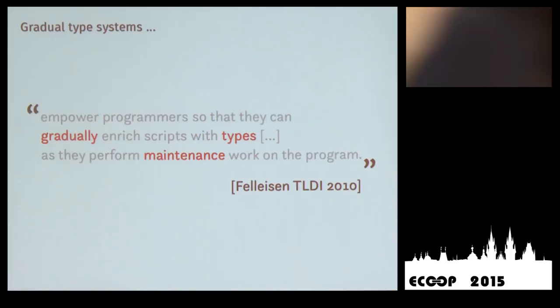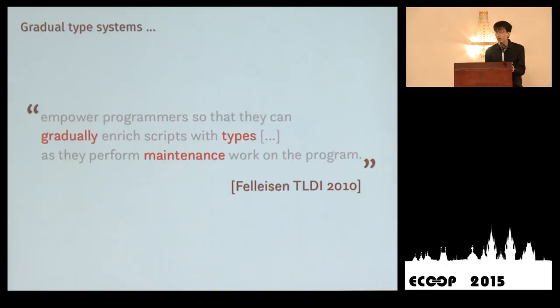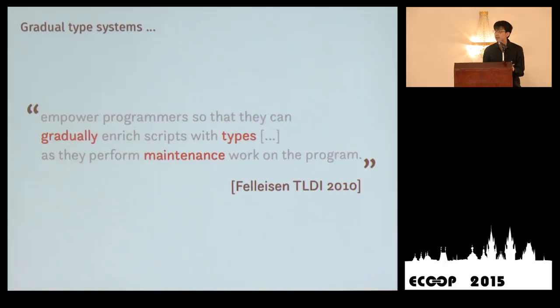I'd like to start with a quote from one of our modest and soft-spoken researchers here: 'Gradual type systems empower programmers so that they can gradually enrich scripts with types as they perform maintenance work on the program.' For the purpose of this talk, I'm going to call this the gradual typing thesis. There are a couple of key elements highlighted here: we want to gradually add types, and the purpose of adding these types is so that we can do software maintenance.